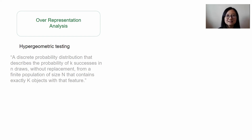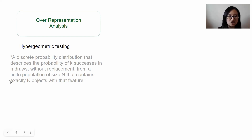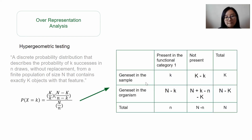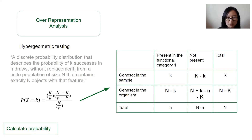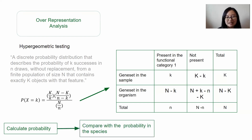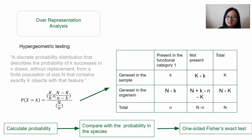Over-representation analysis captures this idea using a mathematical model called hypergeometric testing. In short, it tries to get the number of the gene set in the sample versus the number of the gene set in the organism. Based on this mathematical model, they calculate the probability of this gene set in the DEG as compared to the probability of this gene set in the species. From there, they can get the significance level using a statistical test — specifically a one-sided Fisher's exact test.